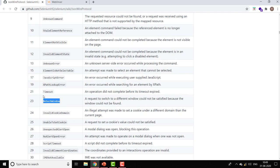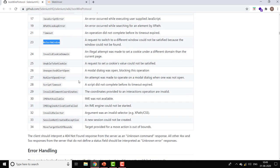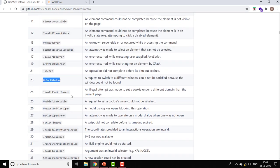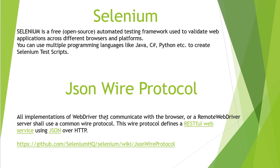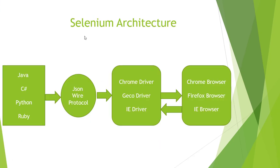We can catch these exceptions and work with them. This is a very important document — you can go through it and get an idea of what's happening. Now that we have understood what JSON wire protocol is, we are ready to understand the Selenium architecture.